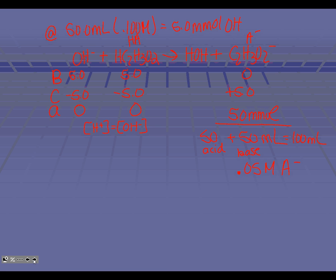This is our conjugate base, our A minus. It's weak, and weak always equals ICE. So the next thing up is ICE. We're going to start with our conjugate base because that's the only thing left in solution. Any time we have a weak base, we always react it with water. That's going to produce our conjugate acid and hydroxide. We've got an ICE chart to create.